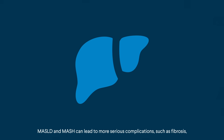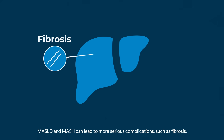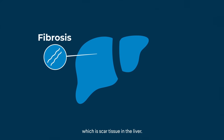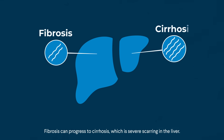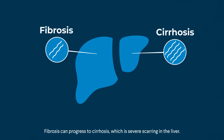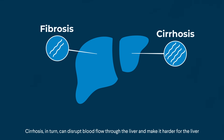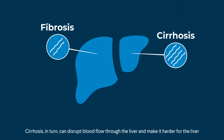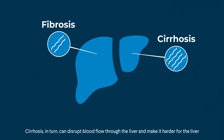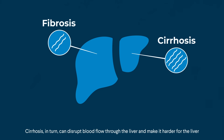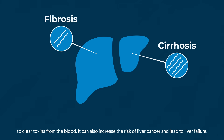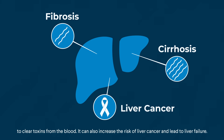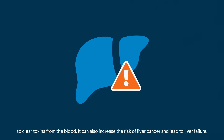MASLD and MASH can lead to more serious complications, such as fibrosis, which is scar tissue in the liver. Fibrosis can progress to cirrhosis, which is severe scarring in the liver. Cirrhosis can disrupt blood flow through the liver and make it harder for the liver to clear toxins from the blood. It can also increase the risk of liver cancer and lead to liver failure.